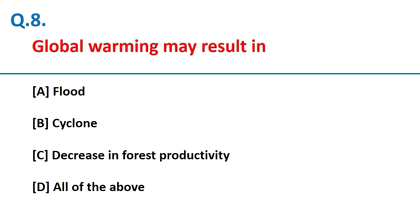Global warming may result in flood, cyclone, and decrease in forest productivity. So the answer is all of the above.